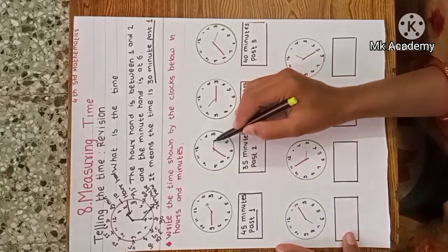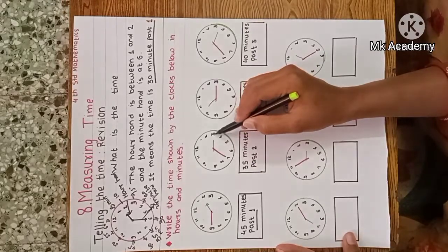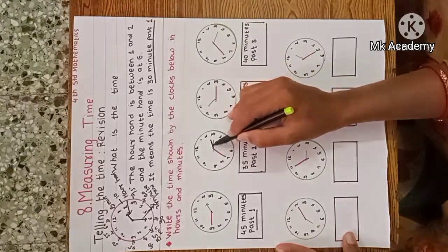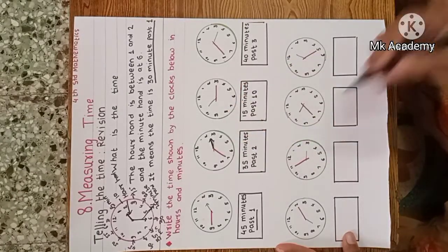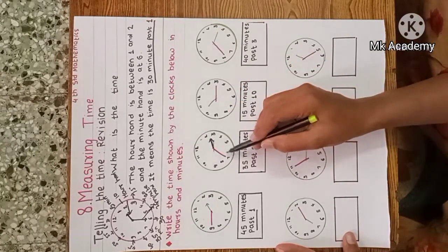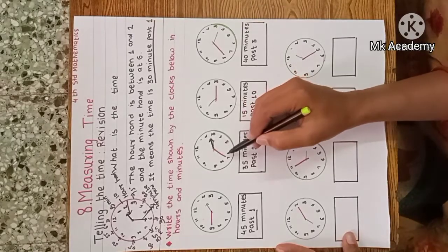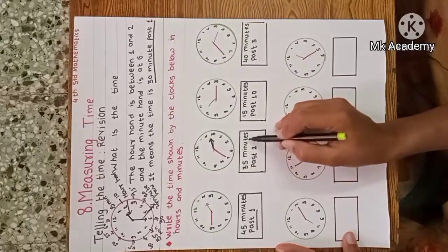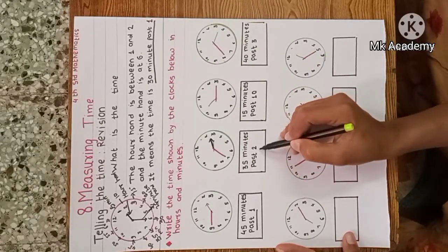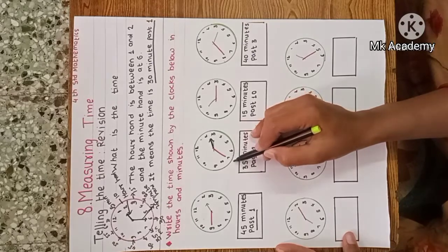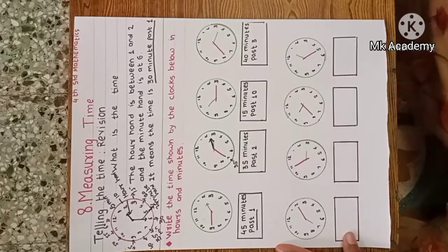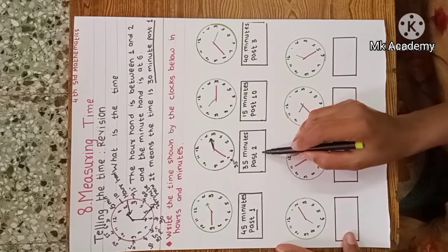Second clock: the hour hand is in between two and three, and the minute hand is on seven. Seven means 35 minutes, therefore the time is 35 minutes past two.